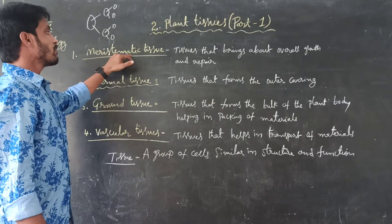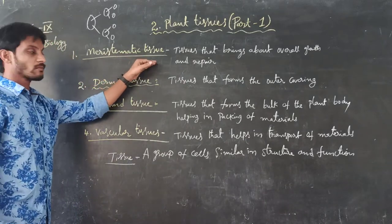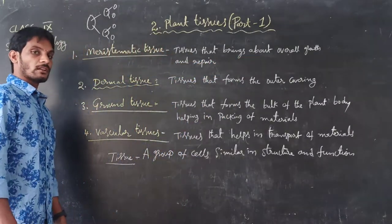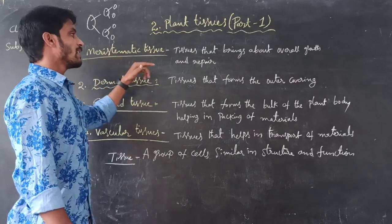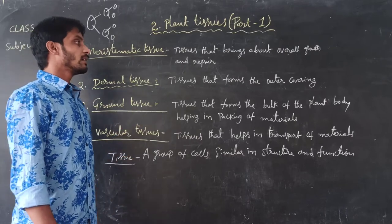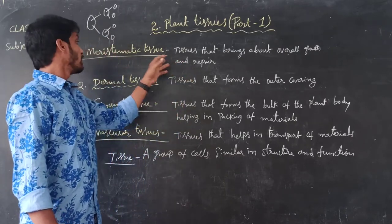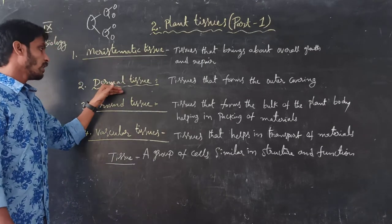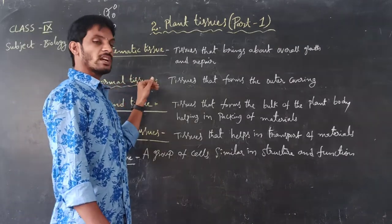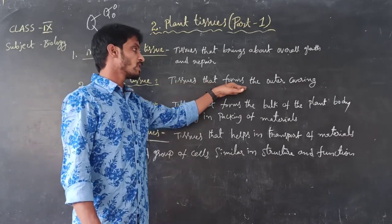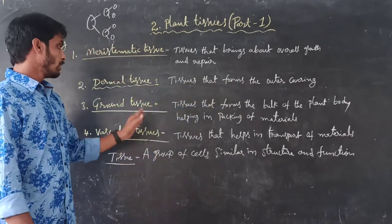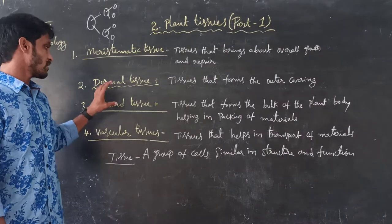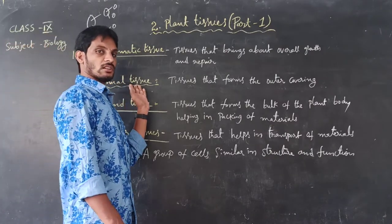First, what is meant by meristematic tissue? Tissues that bring about growth and repair — these meristematic tissues mainly help in the growth of plants and repair of damaged parts. Second, dermal tissue — tissues that form the outer covering of plants are called dermal tissues.